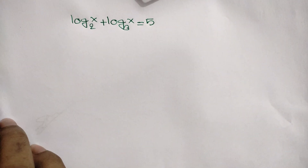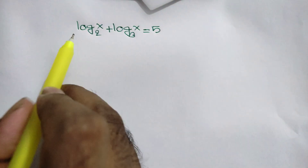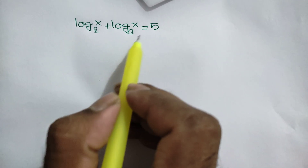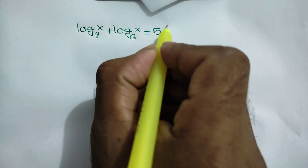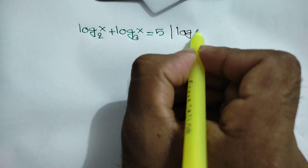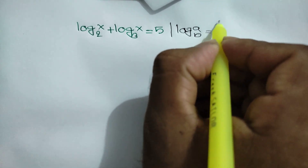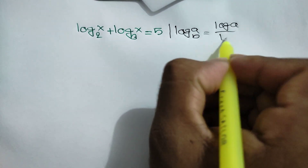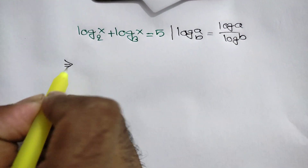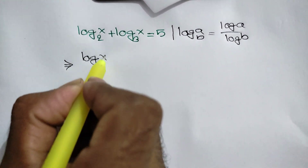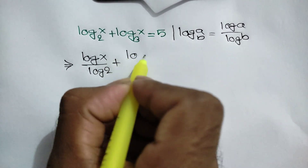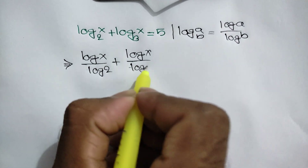Hi everyone, in this video I am going to show how to find the value of x where log of x base 2 plus log of x base 3 is equal to 5. We know that log of a base b is equal to log of a over log of b. Applying this rule, we can write log of x over log of 2 plus log of x over log of 3.